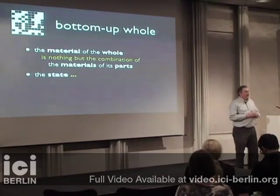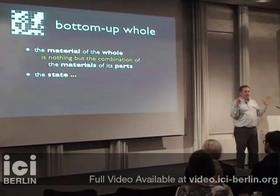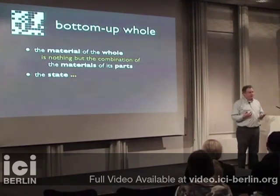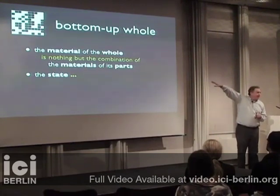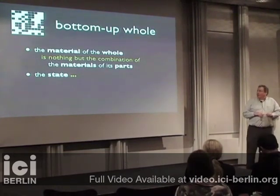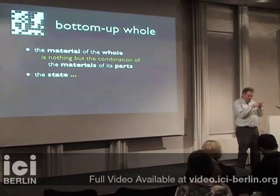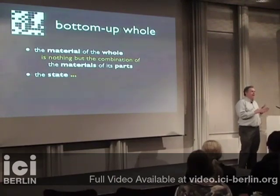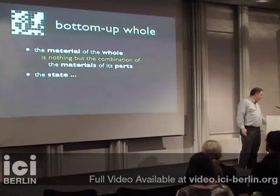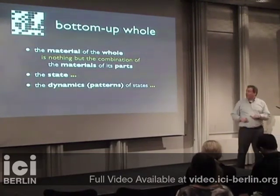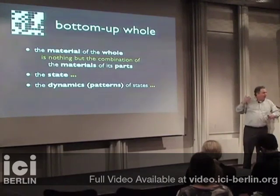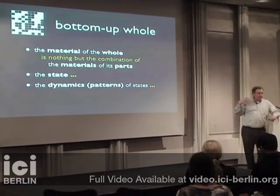Another feature is that the state, or the property, of the whole is nothing but the combination of the states of its parts. There are various global states that one might observe in a system like that. The state of the whole could be described by just describing the states of all the parts and how they're combined. Furthermore, sometimes we're interested not in individual states but in patterns or processes that happen over time — those are just sequences of states. The dynamics, or these patterns, in states of bottom-up wholes are also nothing but the combination of the dynamics of the parts.